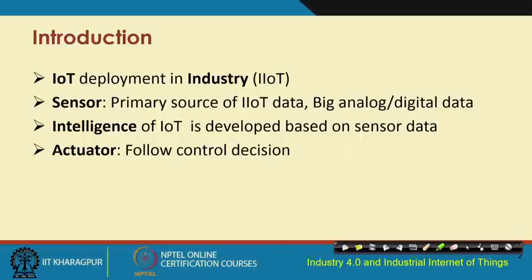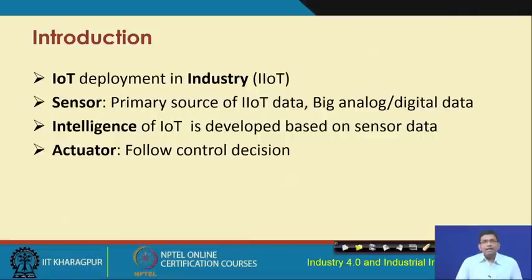As a recap, when we are talking about IIoT, we are essentially talking about the same thing as IoT but considering industry-specific applications. There are certain industry-specific requirements that will have to be catered to. For IIoT as well, like IoT, sensors and actuators are the core technologies - the core components which form the backbone behind the collection of all this different data and making different changes dynamically to the system. Sensors are basically the primary source of IIoT data, and there can be different types of data sensed using different sensors.